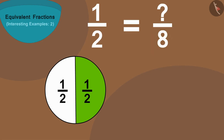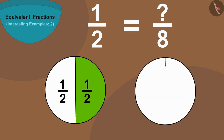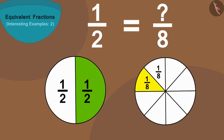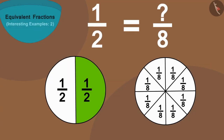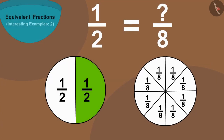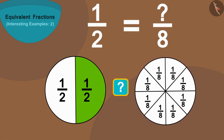In this way we can make a similar circle and divide it into eight equal parts. Now we have to find out how many parts of these eight parts should we take so that it is equal to half of the first circle.